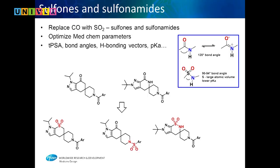One question was: can we replace a carbonyl with SO2? What's the difference? Both can form hydrogen bonds. But SO2 is interesting — in a sulfonamide, the oxygens repel each other, squishing the other bonds closer. An amide has a 120-degree bond angle, but a sulfonamide is less than tetrahedral — around 92 degrees. That changes the shape of the molecule, potentially improving how the compound binds to the protein.